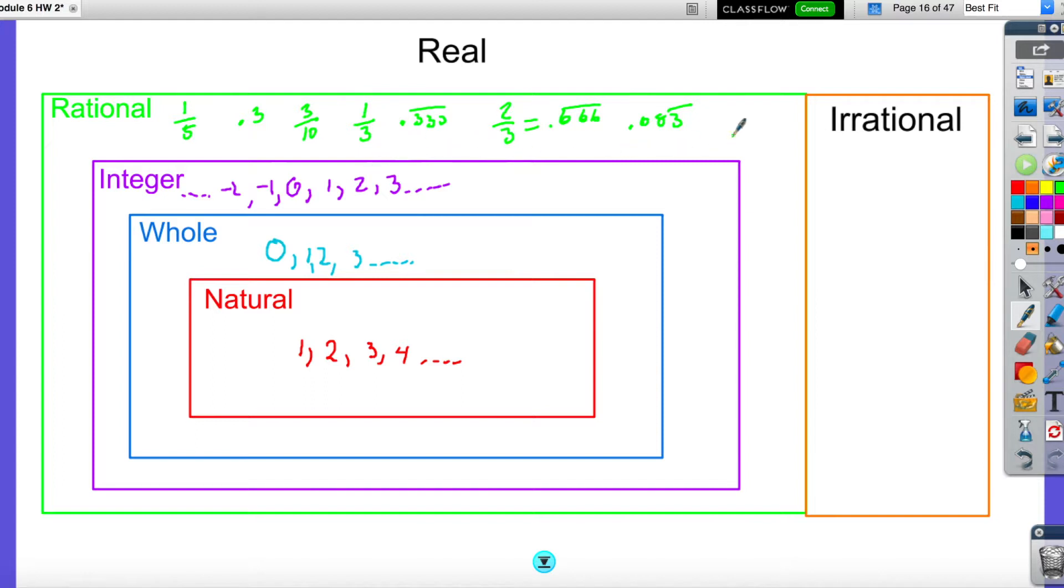The other thing is it includes everything before it, so negative 1, 0, 1, and so forth. It includes all the integers, whole numbers, natural numbers, and so on.